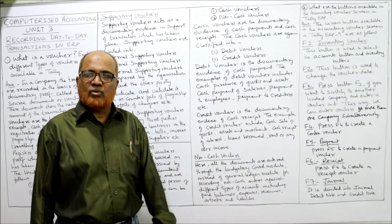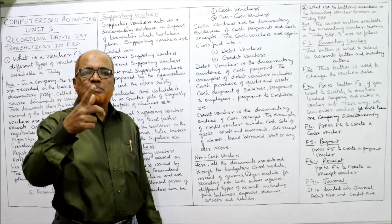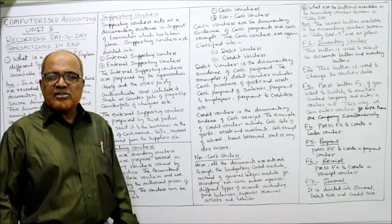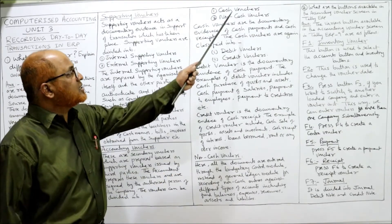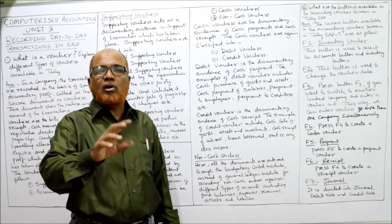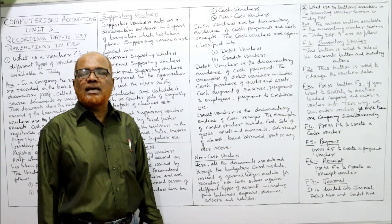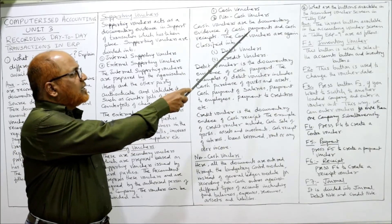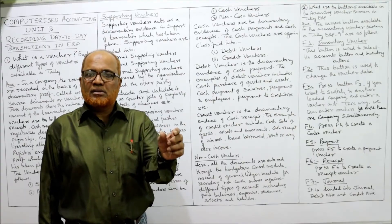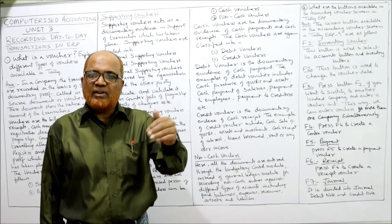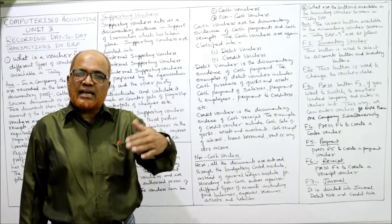Accounting vouchers are divided into two categories: cash vouchers and non-cash vouchers. A cash voucher is one in which cash is involved — there is either an inflow or outflow of cash, a receipt or payment of cash. When there is no cash involved and only an adjustment is made, that type of voucher is called a non-cash voucher. Cash vouchers are further divided into debit cash vouchers and credit cash vouchers.